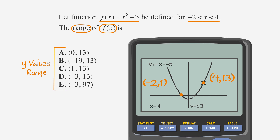If we just find the y values at these two points, we might be tempted to say that the range of all possible y values when x is between negative 2 and 4 is from 1 to 13, but we'd be wrong. Because it's a parabola, y values actually go as low as negative 3. So the range of f(x) when x is between negative 2 and 4 is as low as y equals negative 3 and as high as y equals 13. Choice D is the correct answer.